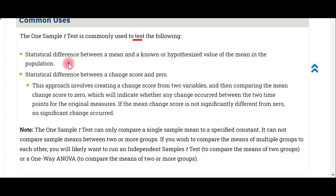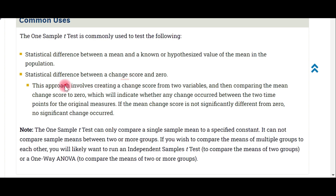It is normally used to test the statistical difference between the mean and the hypothesis value — that is, whether the hypothesis value is a significant value. Another use is testing whether the statistical difference between a change score is zero. This approach involves creating the change score from the variable, then comparing the mean change score to zero, which indicates whether any change occurred between two time points. If the mean change score is not significantly different from zero, then no significant change occurred.